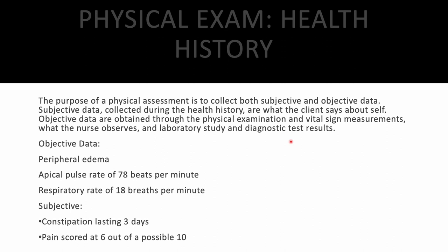Objective data is obtained through physical examination, vital sign measurement, observation, and diagnostic studies — things the nurse observes. Examples: peripheral edema, apical pulse of 78, respirations of 18. Subjective data is what the client reports about themselves. Examples: 'I've had constipation for three days,' 'I have a pain score of six out of ten.' Know the difference for easy points.